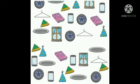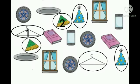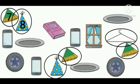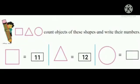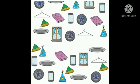Students, count the objects of triangle shape: 1, 2, 3, 4, 5, 6, 7, 8, 9, 10, 11, 12. So students, the objects of triangle shapes are 12.